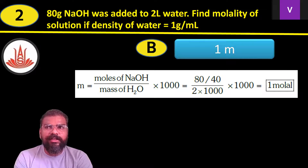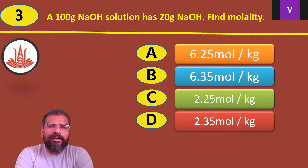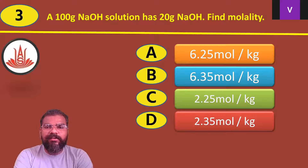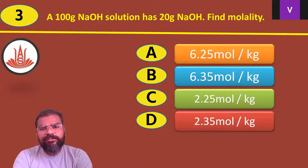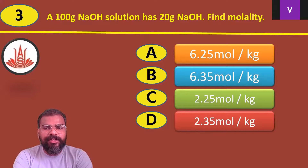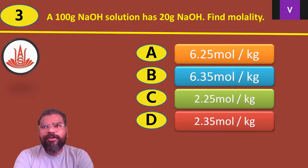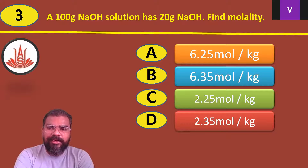Question number 3: 100 gram of NaOH solution has 20 gram of NaOH. Find the molality of this solution. Option A: 6.25 mol/kg. Option B: 6.35 mol/kg. Option C: 2.25 mol/kg. Option D: 2.35 mol/kg.